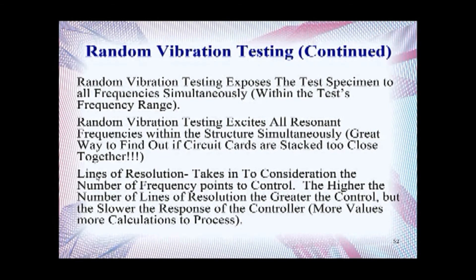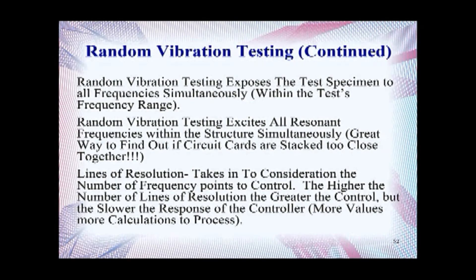As discussed in the previous presentation, Lines of Resolution takes into consideration the number of frequency points to control. The higher the number of lines of resolution, the greater the control, but the slower the response of the controller, because it has more frequency points to calculate. If you have a high number of lines of resolution, your controller will react more slowly and your real-time data will be delayed, which could potentially be dangerous because you would not be able to see issues on your vibe graph while running your tests, and it might be too late to stop a test.